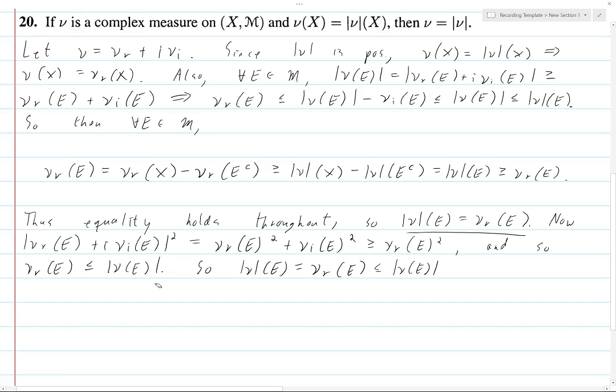But then, again, by proposition, what, 13.3a, I think it is. Or 3 point, chapter 3, no, whatever. That one proposition, you can find it. This is less than or equal to |ν| of e. So, again, equality holds throughout. This means that ν_r of e is equal to |ν| of e.